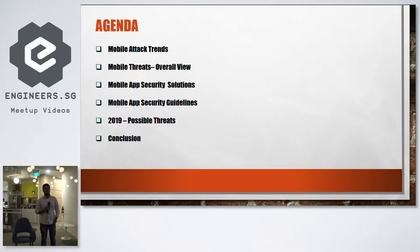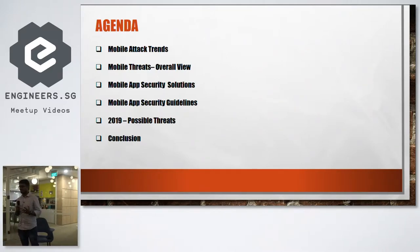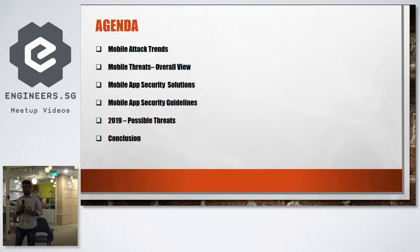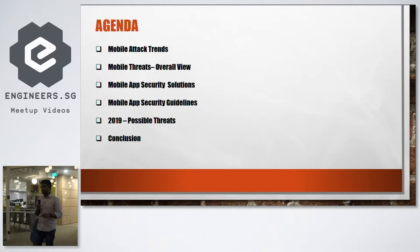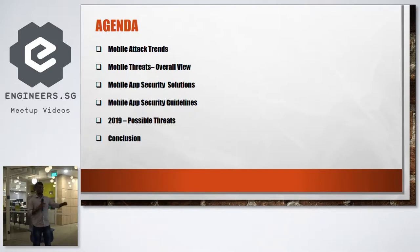These are the topics we are going to talk about today. First, how is the current world looking at mobile application attacks — how many attacks are happening? I collected trends from around the world and will draw some conclusions before going into solutions. So first we discuss mobile attack trends, and the next step is mobile threats — we need to know what component-wise threats are common, since attacks may or may not happen depending on the application and the component.